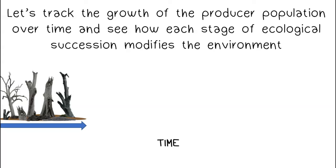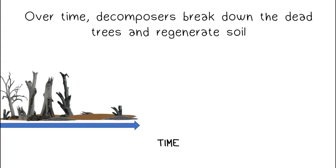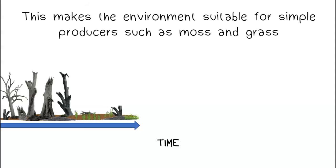Let's track the growth of the producer population over time and see how each stage of ecological succession modifies the environment. Over time, decomposers break down the dead trees and regenerate soil. This makes the environment suitable for simple producers such as moss and grass.